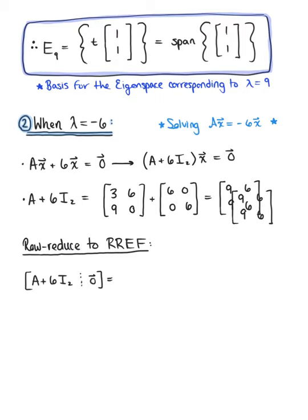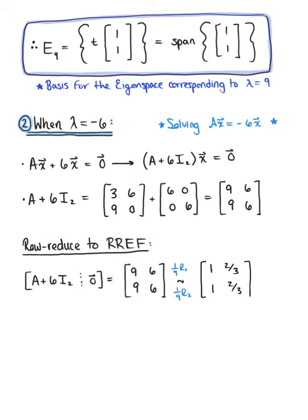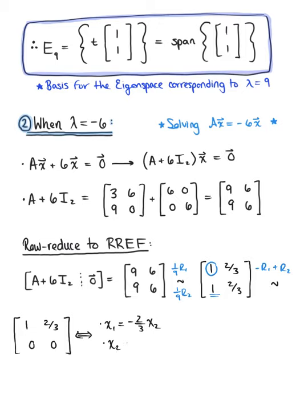We augment matrix A plus 6I with the zero vector and row reduce. Multiplying each row by 1/9 gives 1, 2/3, 1, 2/3. Then multiplying row 1 by negative 1 and adding to row 2 gives row reduced echelon form: 1, 2/3, 0, 0. We see x sub 2 is a free variable, and the system gives x sub 1 equals negative 2/3 times x sub 2.